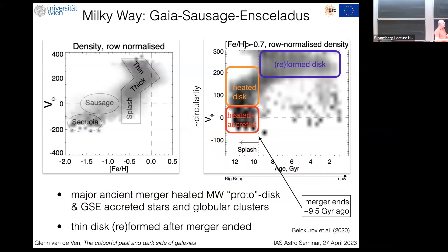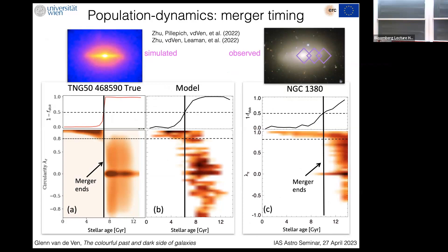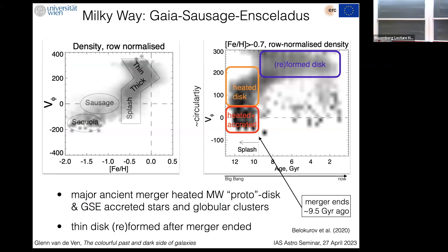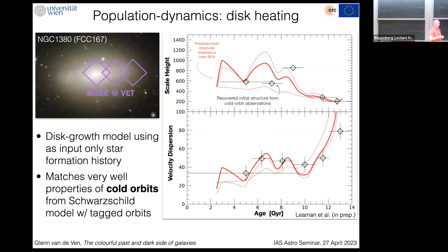This same technique works for the Milky Way — similar plots, just inverted in time, show the same shape. We can time the Enceladus merger in the Milky Way in a similar way to what we can now do for a nearby external galaxy like our pilot system.